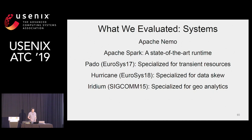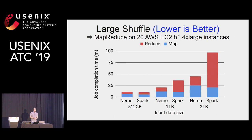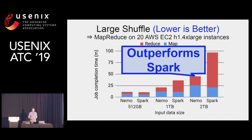We compare Nemo with Spark and PADO, which is specialized for transient resources; Spark is a state-of-the-art data processing runtime. For large data shuffle, we ran map-reduce on 20 EC2 instances. The Y-axis is job completion time (lower is better) and the X-axis is input data size. As input data size grows, Spark degrades due to disk seek overhead, whereas Nemo outperforms Spark with the large shuffle pass optimization.